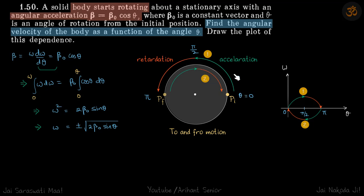So from here to here, the disk will accelerate. And after that, it will retard. Now, if it is retarding, where does it come to stop? So for that, let's find omega as a function of theta. So then we can see where it stops.